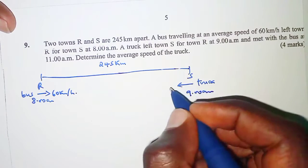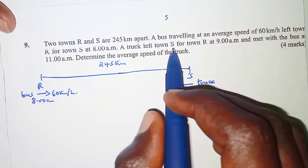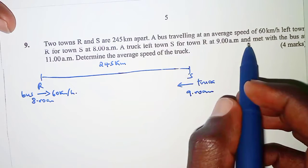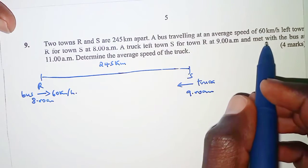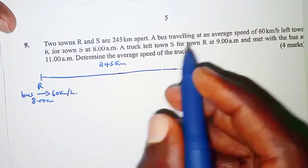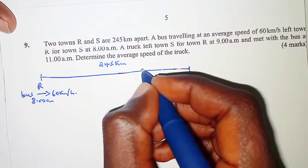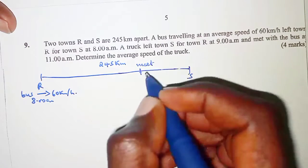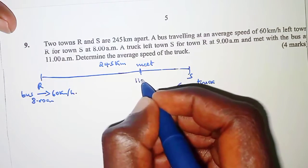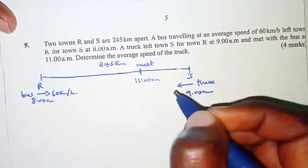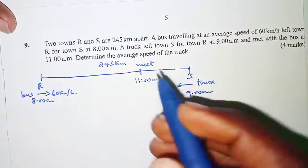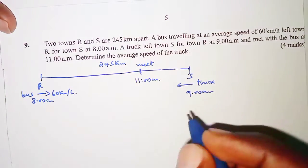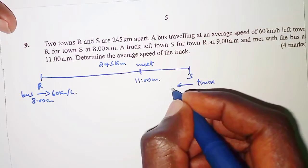The truck's speed has not been given. It's leaving at 9 a.m. and it met with the bus at 11 a.m. We have the meeting point somewhere here at 11 a.m. We are required to determine the average speed of the truck, so let the speed of the truck be x kilometers per hour.